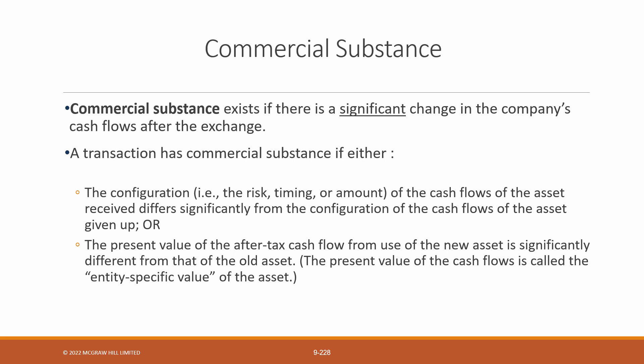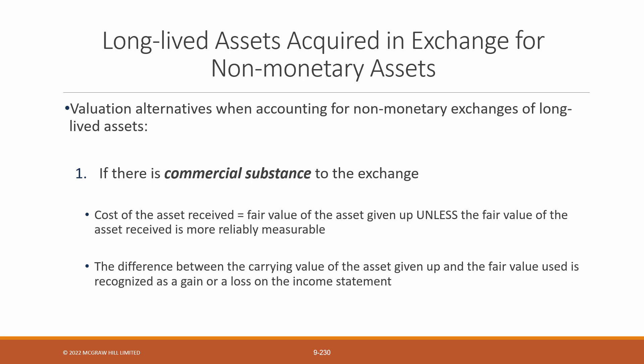This is called the entity-specific value of the asset. For example, if there is no difference in the risk, timing, or amount of revenues, but the asset received reduces operating costs by providing economies of scale, then the present value of the cash flows from the received assets will be higher and therefore benefit the entity. One of these indicators must be true for the exchange to have commercial substance. If one is true, then commercial substance exists and the exchange must be reported using the fair value of the asset given up, unless the fair value of the asset received is more determinable.